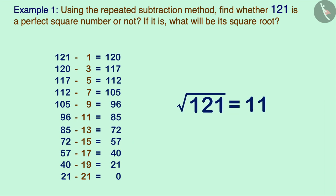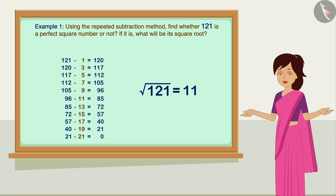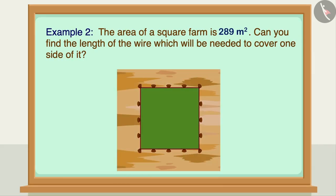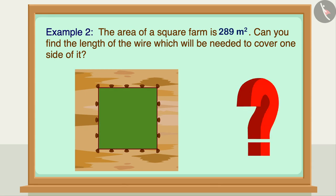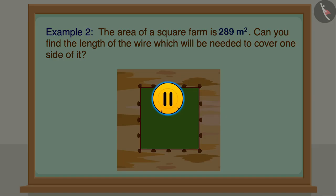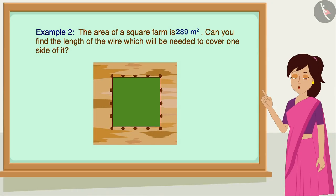Let us now see the next example. The area of a square farm is 289 square meters. Can you find the length of the wire needed to cover one side of it? You may pause the video here and solve the question yourself.